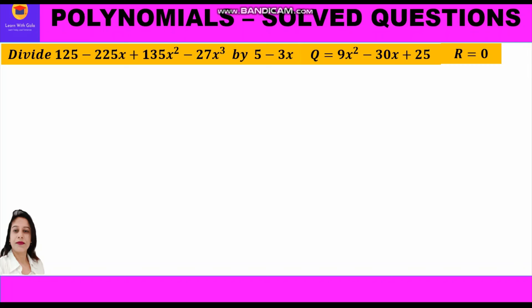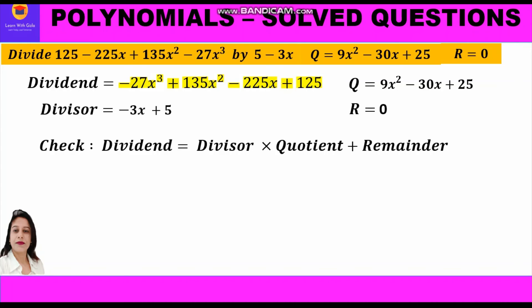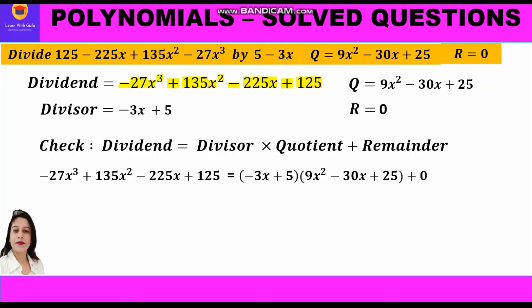Now let us check our answer using the division algorithm. We have all four elements: dividend, divisor, quotient, and remainder. The division algorithm says dividend equals divisor into quotient plus remainder. Substituting: −27x³ + 135x² − 225x + 125 should equal (−3x + 5)(9x² − 30x + 25) + 0.